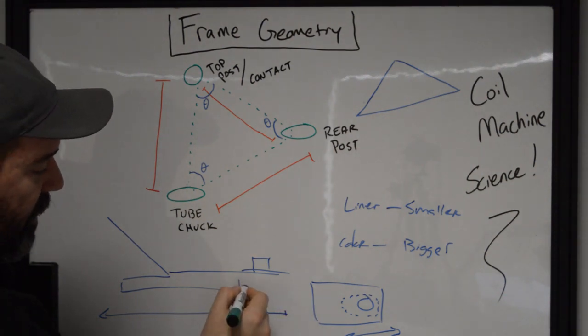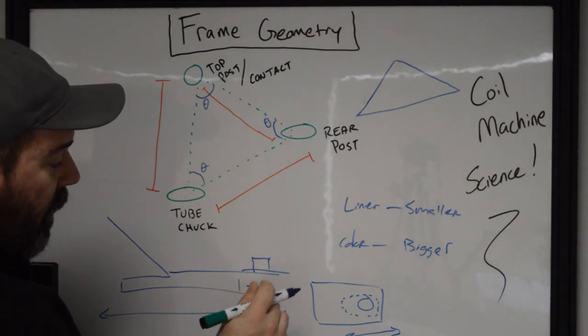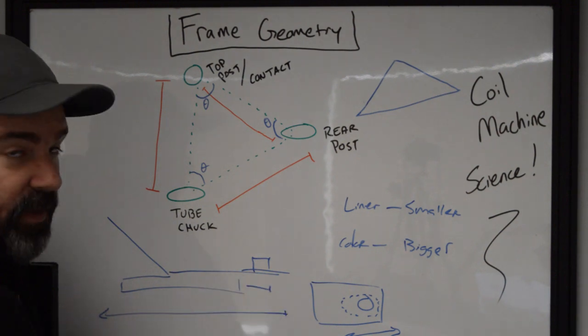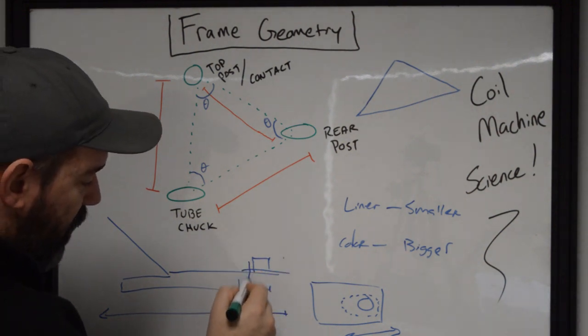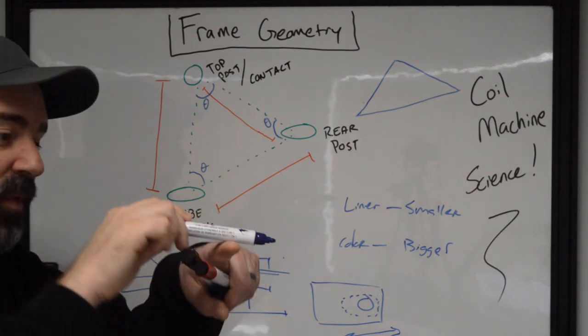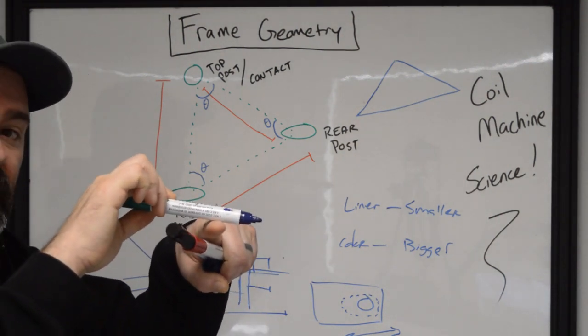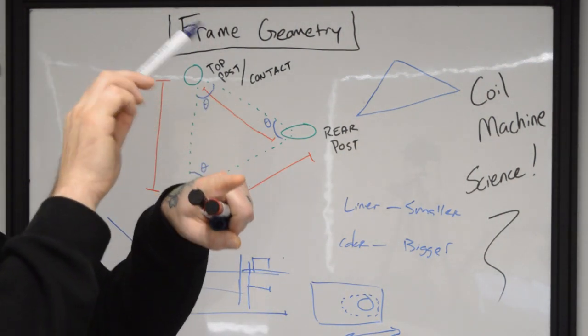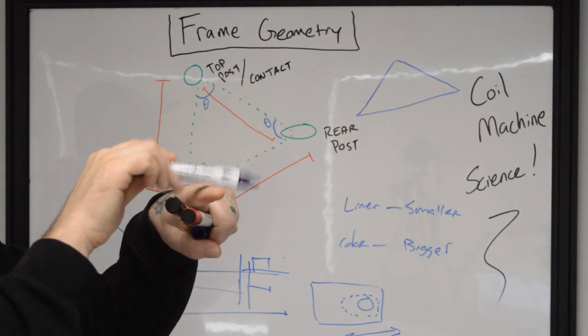Because the closer that that A-bar gets to that rear post, there's less actual flexible material that's going to be off the back of it. If we have something that's really tight in there, that back spring isn't going to have to move a whole lot. It's just going to be straight tension. So you're going to require more energy to pull the A-bar down, but it's going to be quicker in its actual movements.